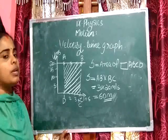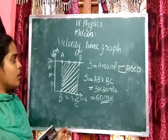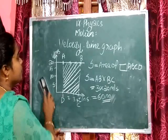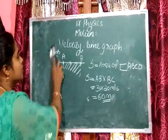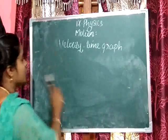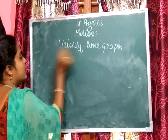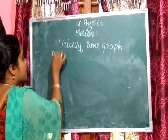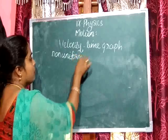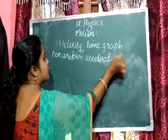This is another use of the velocity-time graph — by using it, we can find the distance travelled by an object moving with constant speed or velocity. Next, we look at the velocity-time graph for non-uniform acceleration.